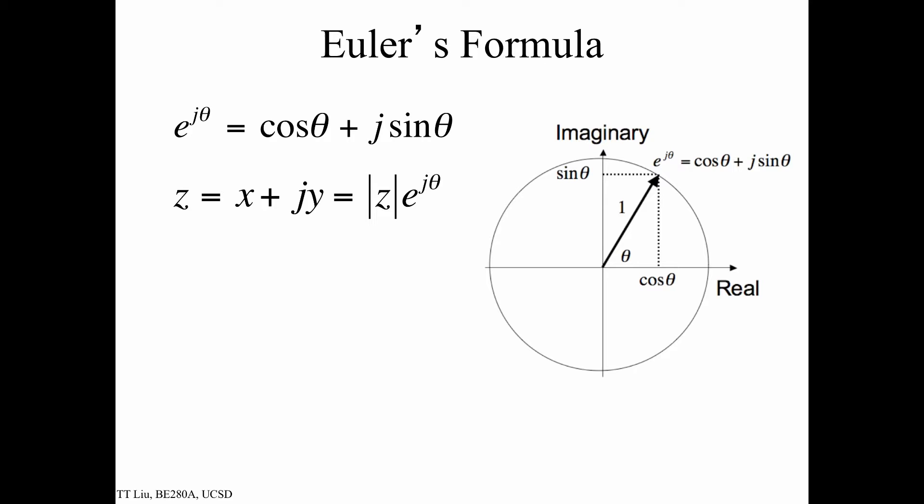As we're looking at the Fourier transform, it's useful to remember Euler's formula, which is essentially that the complex exponential e^(jθ) can be expressed as cos(θ) + j·sin(θ). We'll talk about this more in depth when we discuss MRI, but essentially we can view every complex number in the complex plane. So e^(jθ) is simply this complex number which has cos(θ) on the real axis and sin(θ) on the imaginary axis.